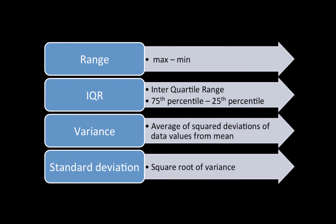Standard deviation is nothing but the square root of the variance. All of these — range, IQR, variance, and standard deviation — are measures of how the values are spread across the range. Measures of central tendency tell you the representative value, while measures of dispersion tell you how the values are spread across the entire range.